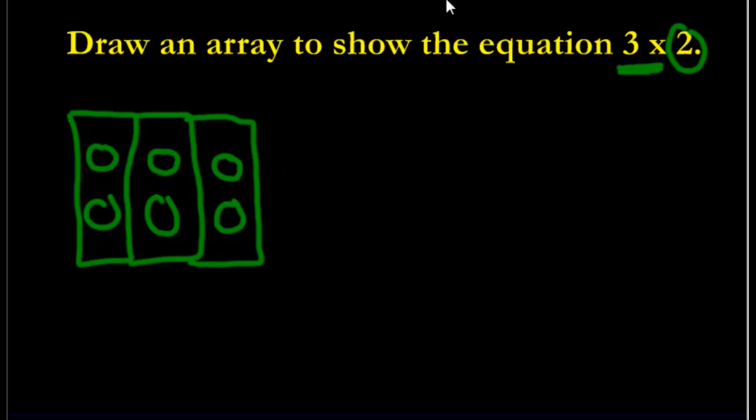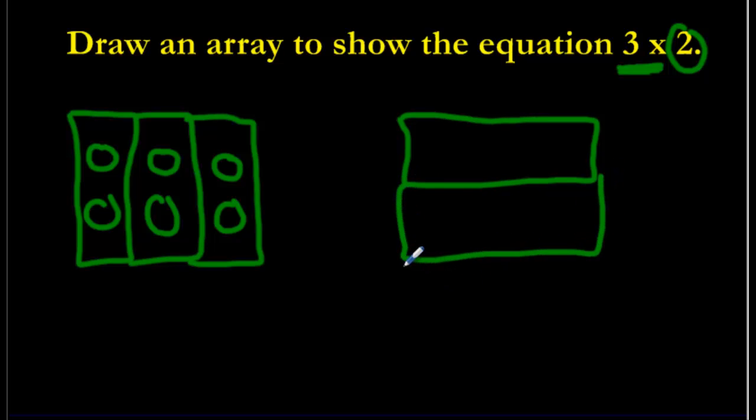However, some people, and this is okay, you might have chosen to draw your array, your groups. Instead of up and down like how I did my rectangles up and down, you might have chosen to do it this way, sideways. And that is completely fine. You could have went like this, one, two, three.